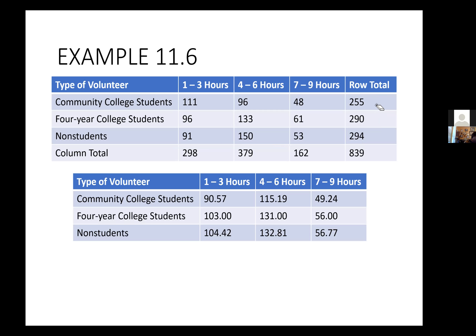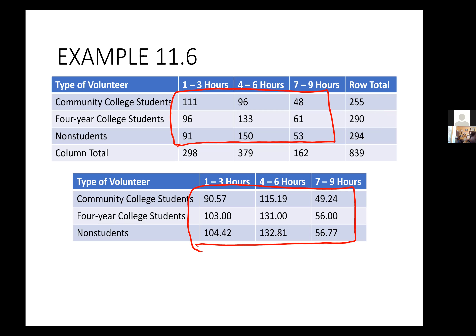So the first table is what we observed and the second table is what we would expect. I'm going to put those in my calculator in matrices — the observed values in matrix A and the expected values in matrix B.